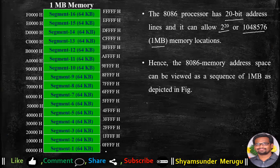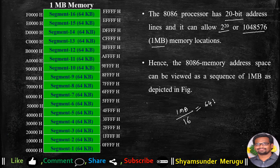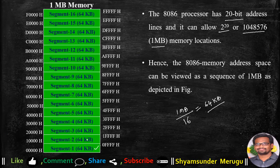The 8086 memory address space can be viewed as a sequence of 1MB as we can see in this figure. The entire 1MB memory can be divided into segments — 1MB divided by 16 logical segments — so that each segment size will be 64KB. Segment 1 will have a capacity of 64KB, segment 2 also will have 64KB, and so on.